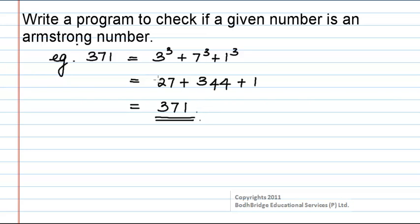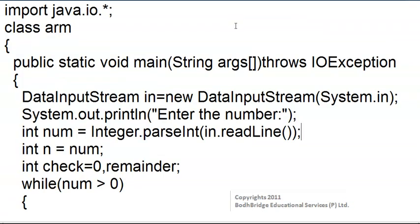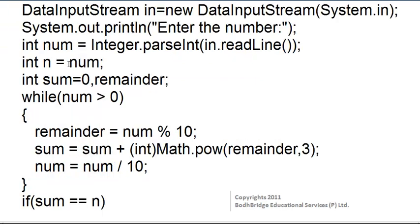Now let us look at the program for checking if a given number is an Armstrong number. Here is the program. We are getting the input from the user — the number which we are going to check. The number given by the user is assigned to the temporary variable n, the sum is initialized to 0, and the remainder is stored in a variable.